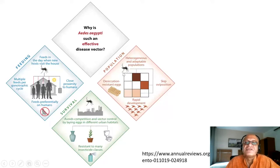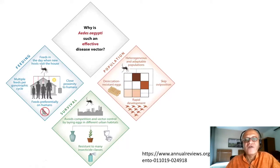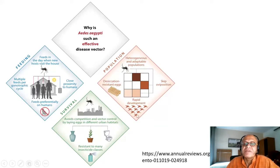Aedes aegypti has already developed resistance to many insecticide classes, with heterogeneous and adaptable populations. Its eggs are remarkably desiccation-resistant — even if water disappears, the eggs can survive for months or even longer than a year, and then incubate once water becomes available again.